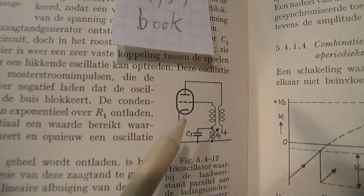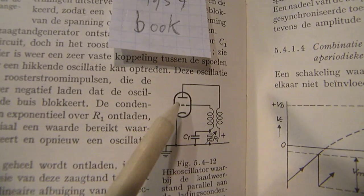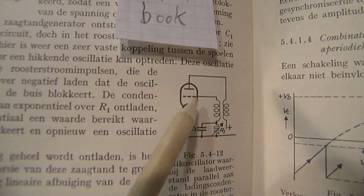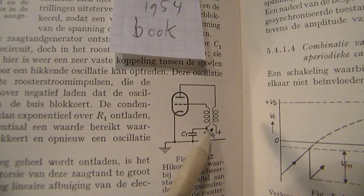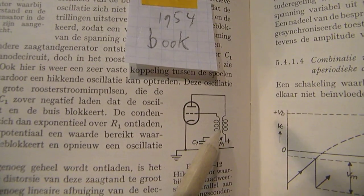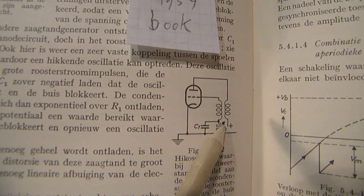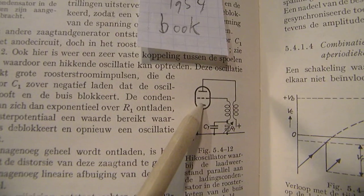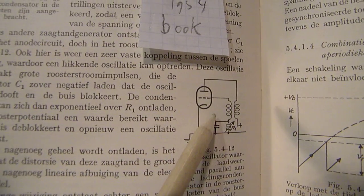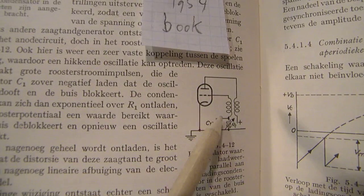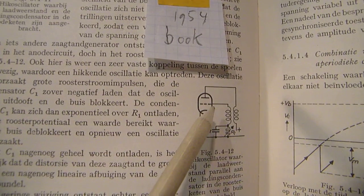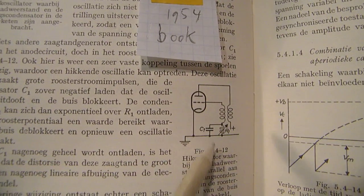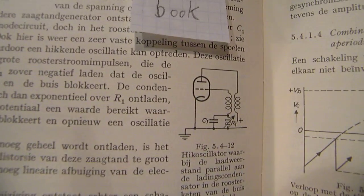You have here in the anode lead a coil, and that coil is coupled back to the grid, the sensitive grid. The phase must be correct, the phase must be changed, and that means the whole thing starts to oscillate.